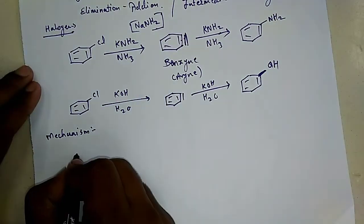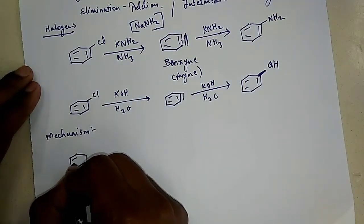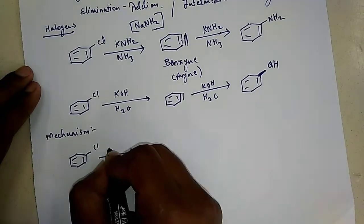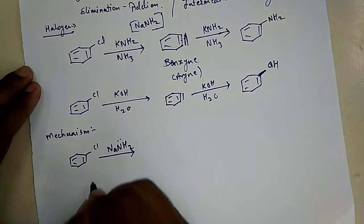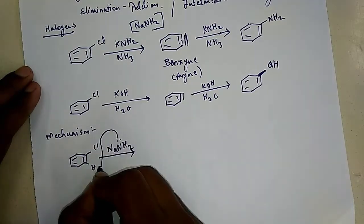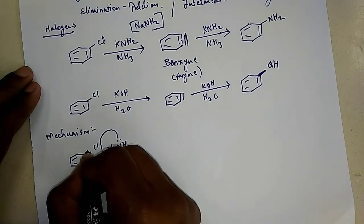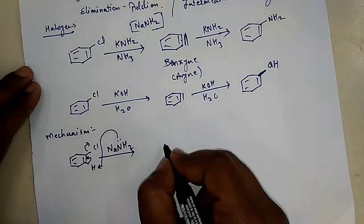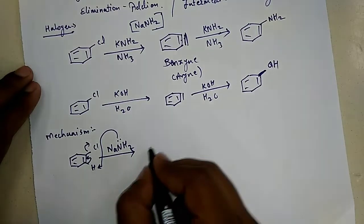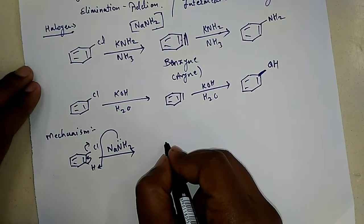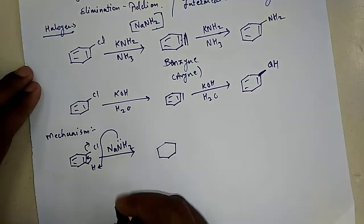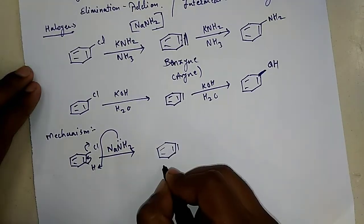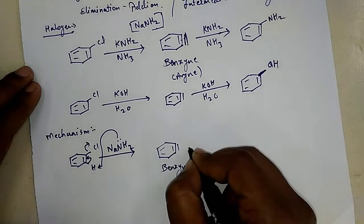Now let's look at the mechanism. In mechanism, when chlorobenzene is being treated with NaNH2, sodamide is a basic one, so the nitrogen lone pair grabs the acidic proton and causes halogen to leave by the formation of triple bond. That is, benzyne is being formed here. This is the intermediate of the reaction.